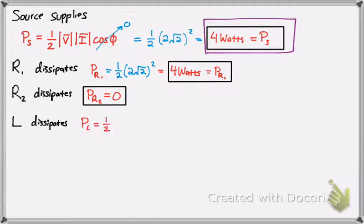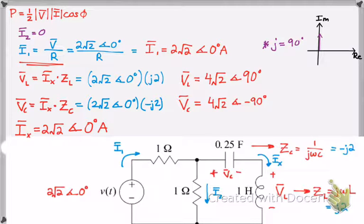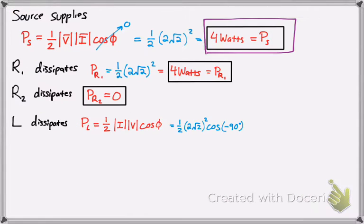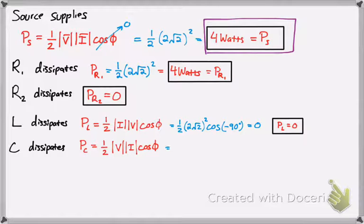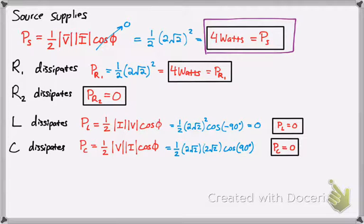For the inductor, we have the same formula: one-half I bar V bar cosine phi. We use the same values, but notice the phi angle is negative 90 degrees defined by V of C. That negative 90 degrees causes the value to be zero, so the inductor does not dissipate power. What about the capacitor? Same formula, different phi angle of 90 degrees instead of negative 90. That also makes it zero. The inductor and capacitor don't dissipate power. Only resistors dissipate power.